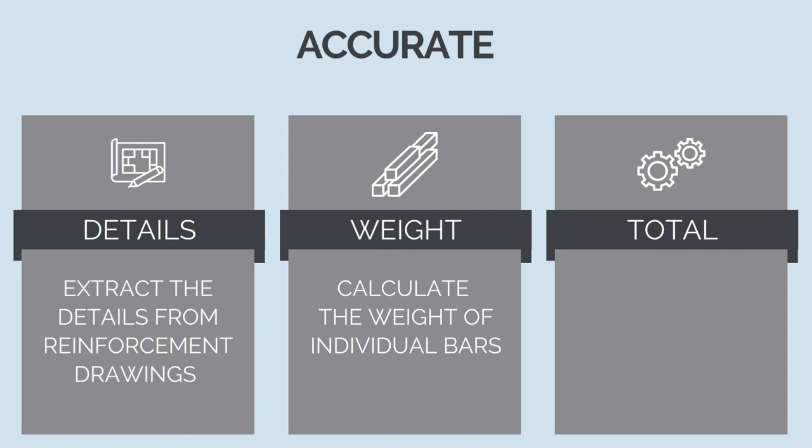7850 kilograms per cubic meter. For standard reinforcing bars, tables are available for various bar diameters. These tables can speed up the quantification process. Step 3 is to multiply the weight of each bar by the number of bars of that type to get the total weight of steel. We need to sum the quantities of all types of bars to get the total quantity of reinforcement.